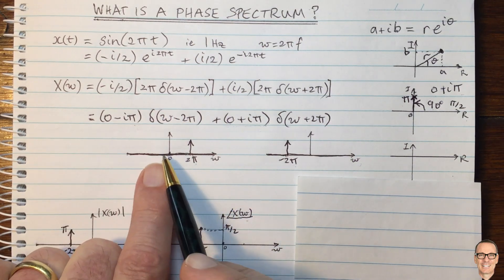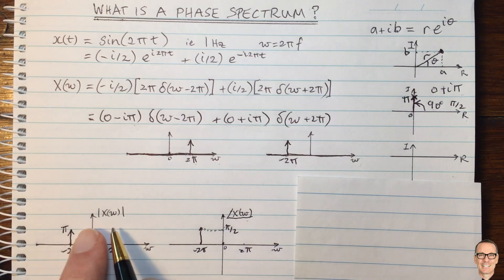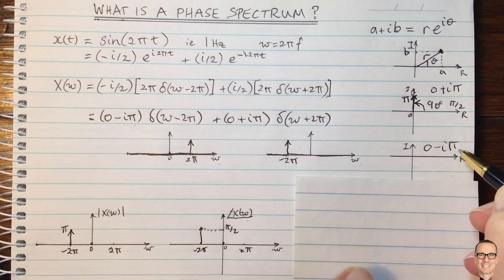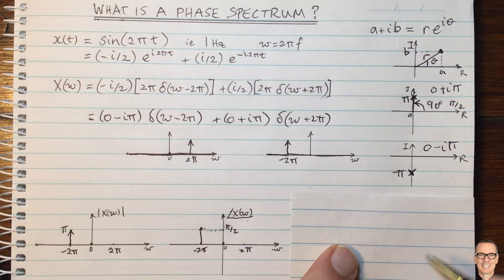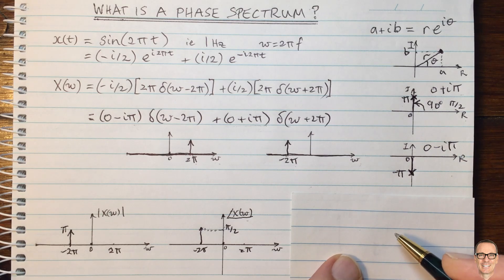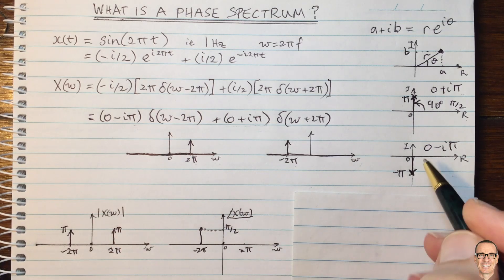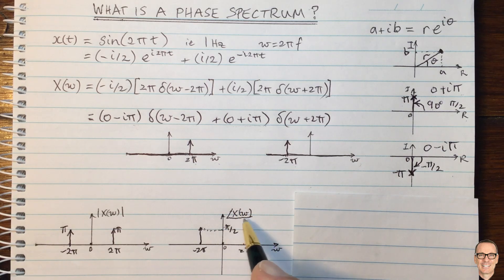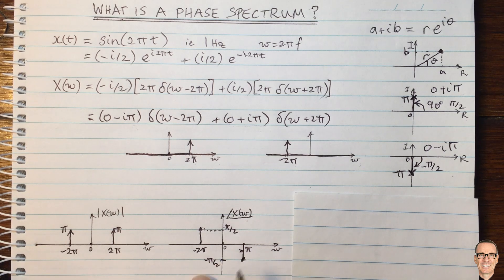Now let's think about the positive omegas. There's only one positive omega with any energy, at omega equals 2 pi. This corresponds to the complex number 0 minus i pi — zero real part and negative pi imaginary part. The magnitude is the distance from the origin, which is pi, giving a delta function with area pi on our magnitude spectrum. The phase angle is minus pi over 2, so on our phase spectrum at omega equals 2 pi we have minus pi over 2.